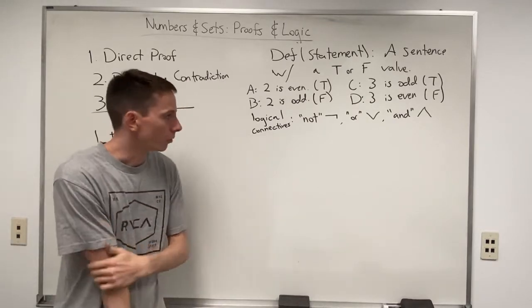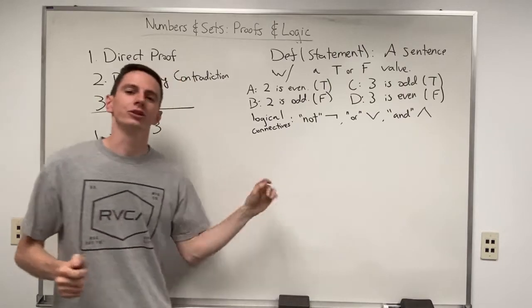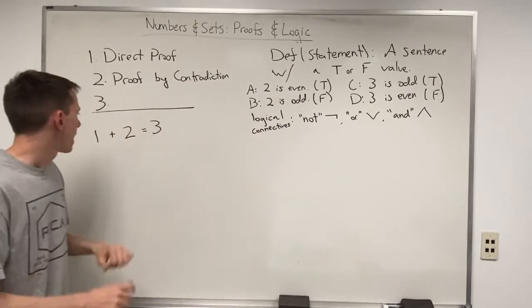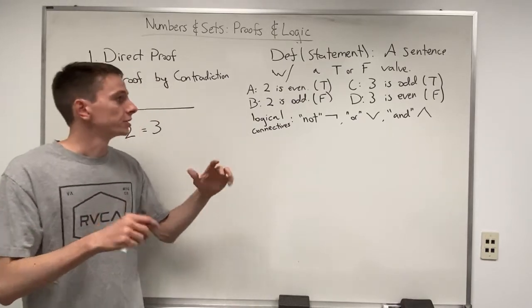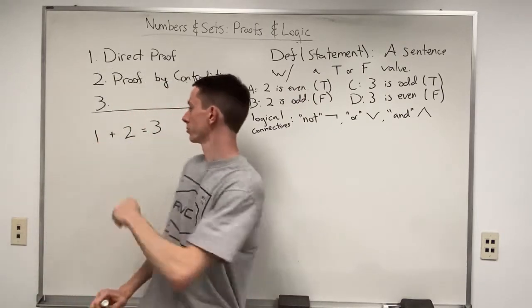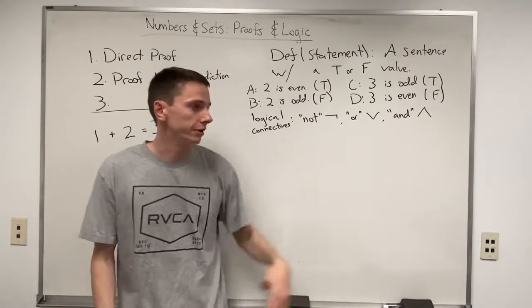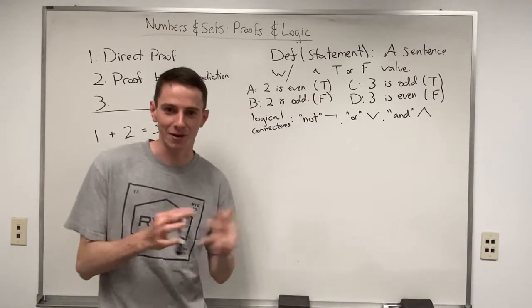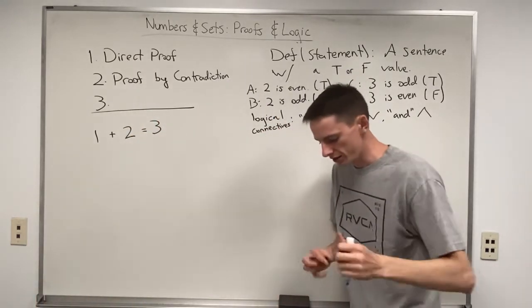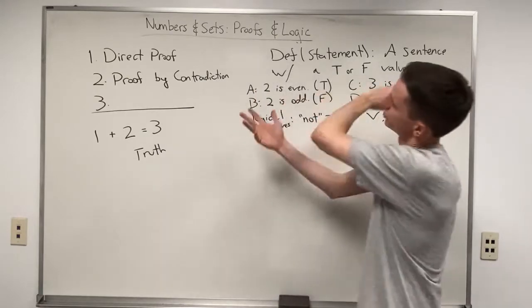Once we learned what addition, subtraction, multiplication, and division were doing, one of the next things we learned was our multiplication tables — they tried to get us to memorize things like seven times three, seven times four, to see how operations acted on various different numbers. Our next step is to see how these logical connectives act on various different statements. The way these typically get organized is in something called a truth table — just like we had times tables, now we have truth tables.